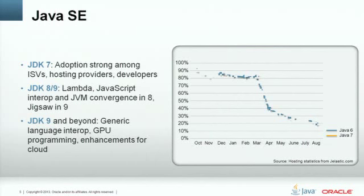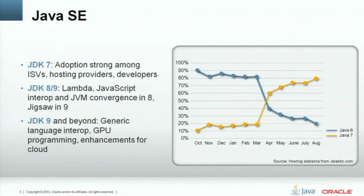Java SE released JDK 7 in 2011. It's now supported by nearly all Oracle products as well as good uptake in the industry. We've added support for Mac OS X as well as Linux ARM. JDK 8 is making good progress, adding new innovative features such as programming for multi-core. Even as of last August, as you can see from the chart, we are seeing massive adoption of Java SE, and you can see how rapidly releases are becoming standard.